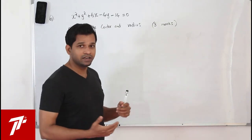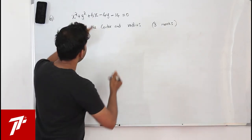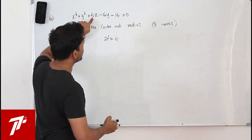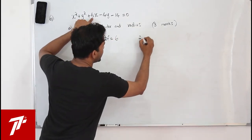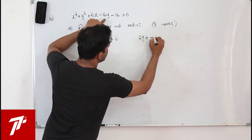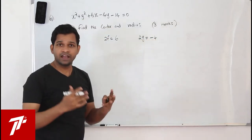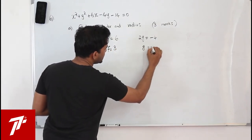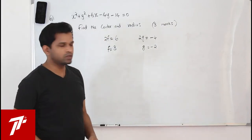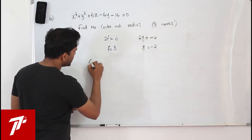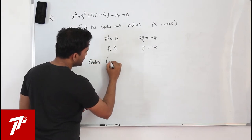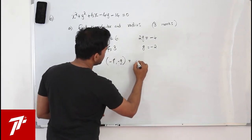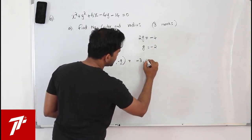I prefer the straightforward method. Take the coefficient of x as 2f, which is 6, and the coefficient of y as 2g, which is minus 4. So f is 6 over 2, and g is minus 4 over 2. Your center is minus f, minus g, which is minus 3 comma positive 2.